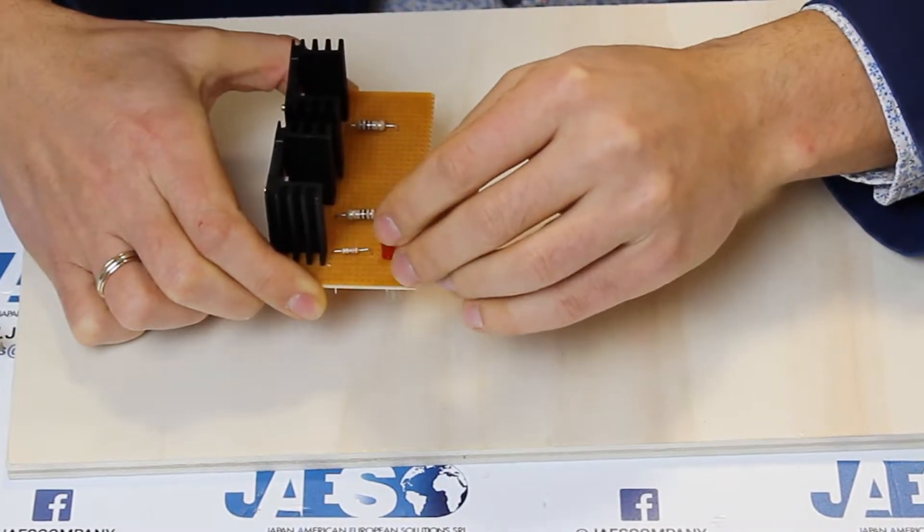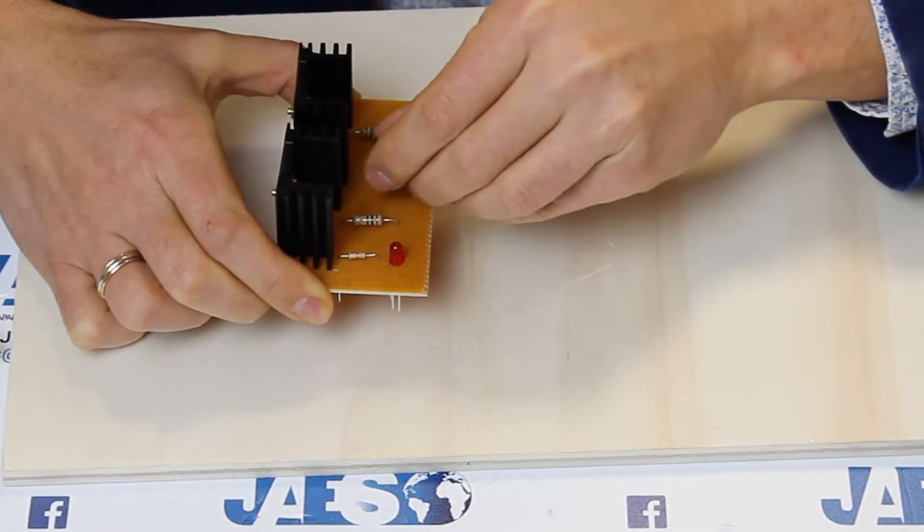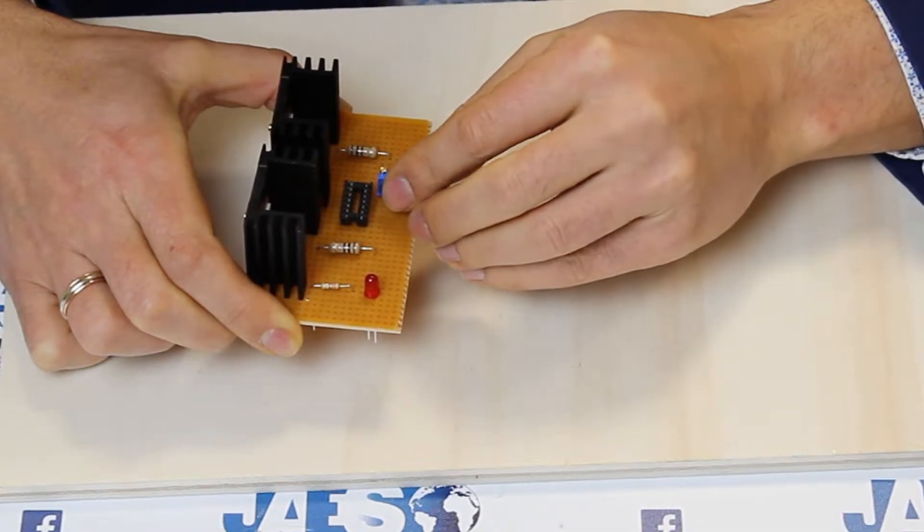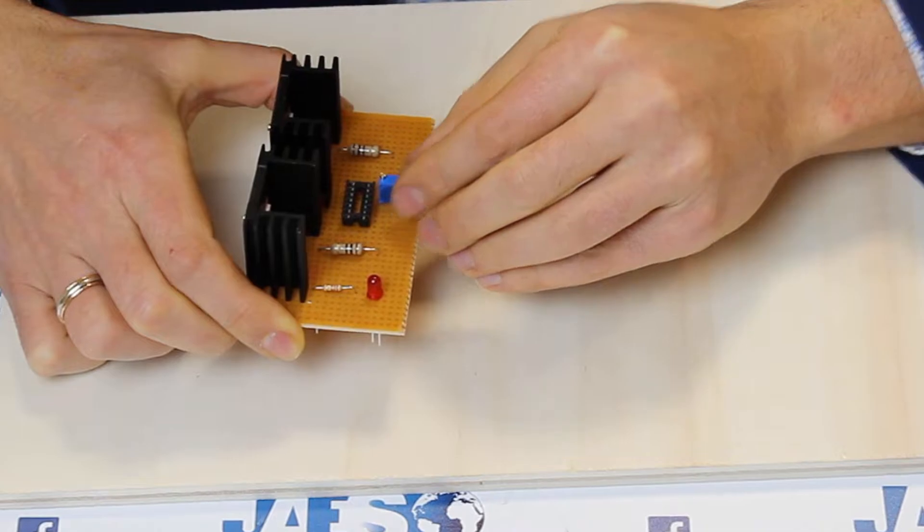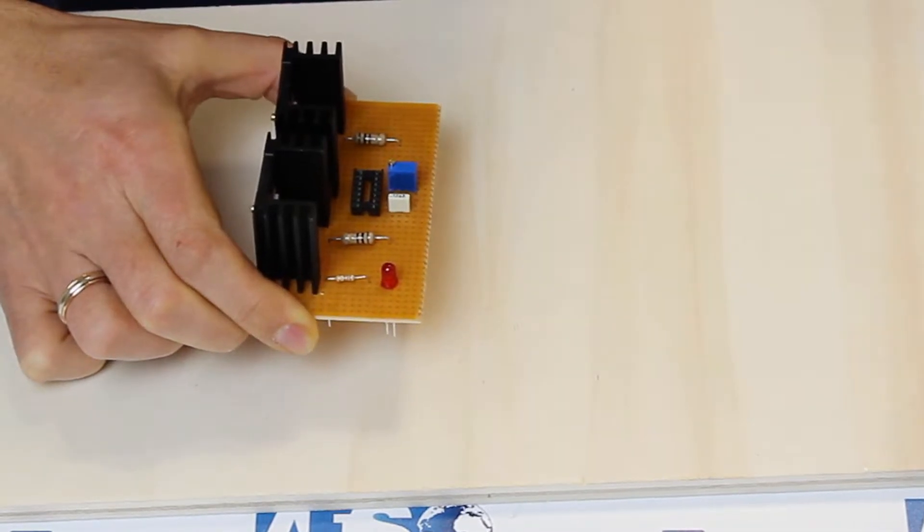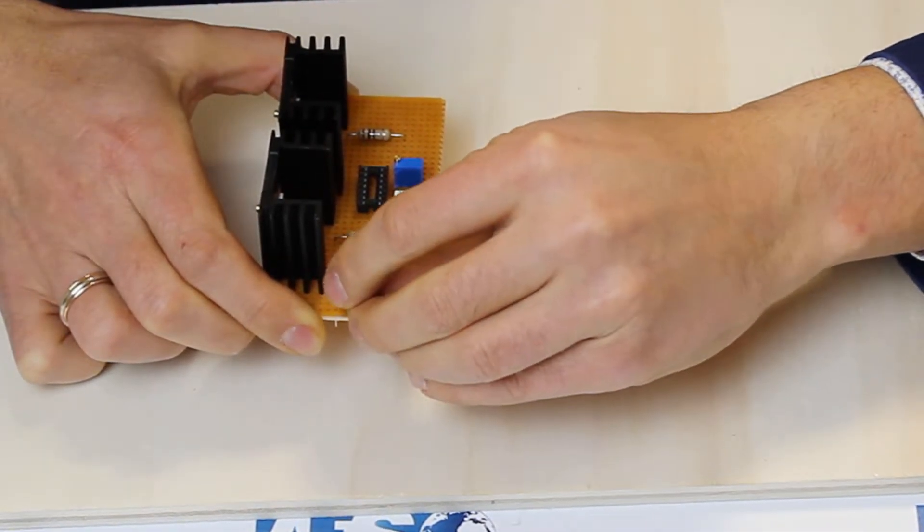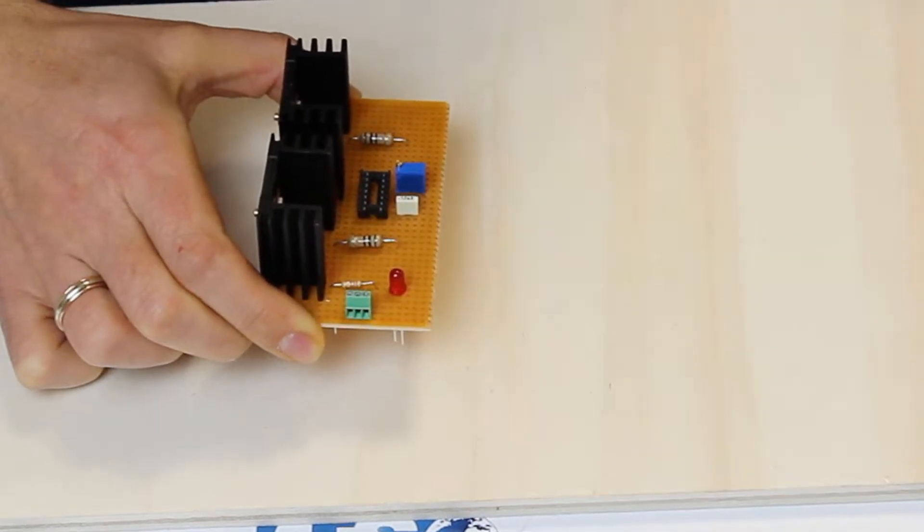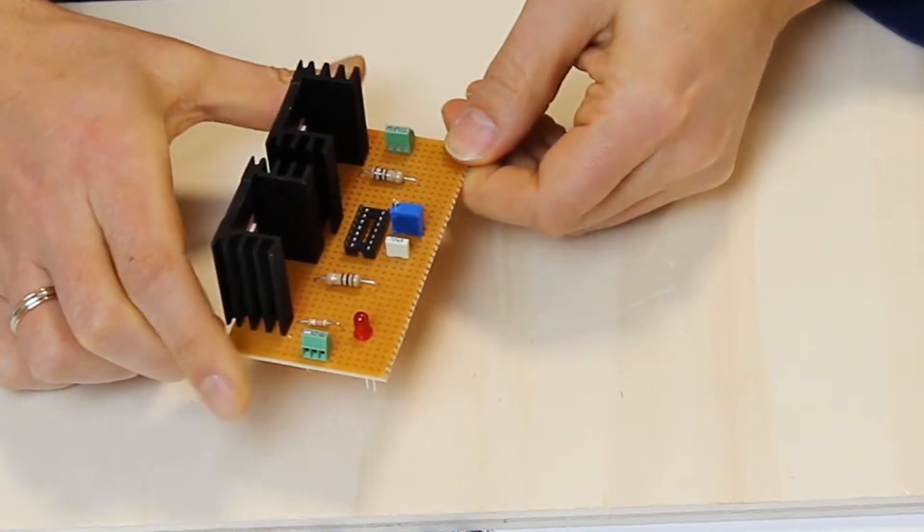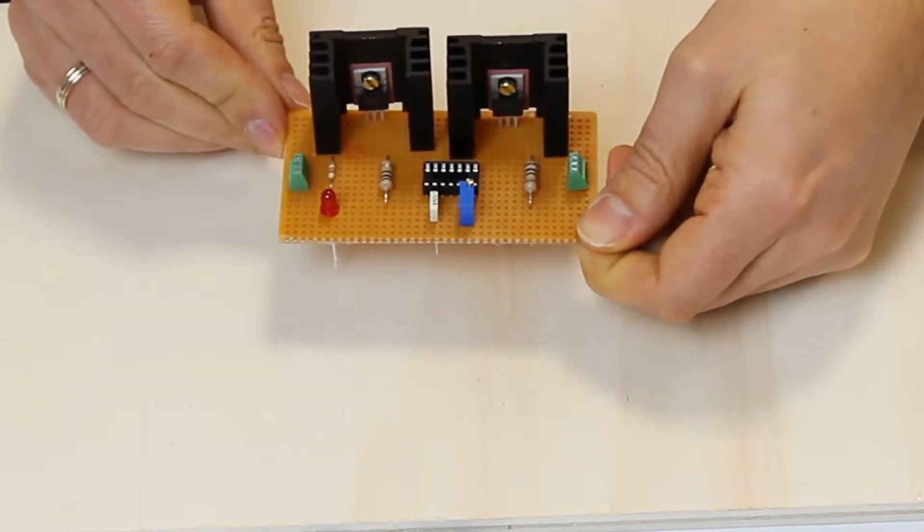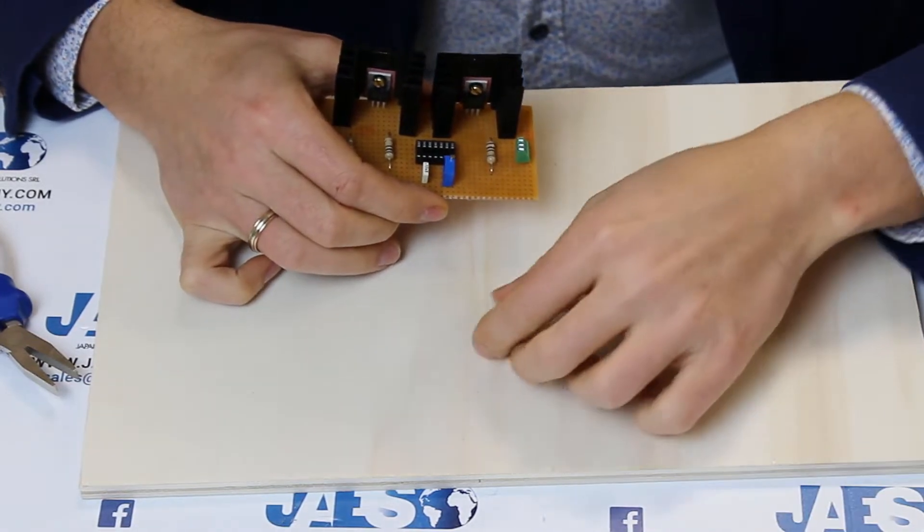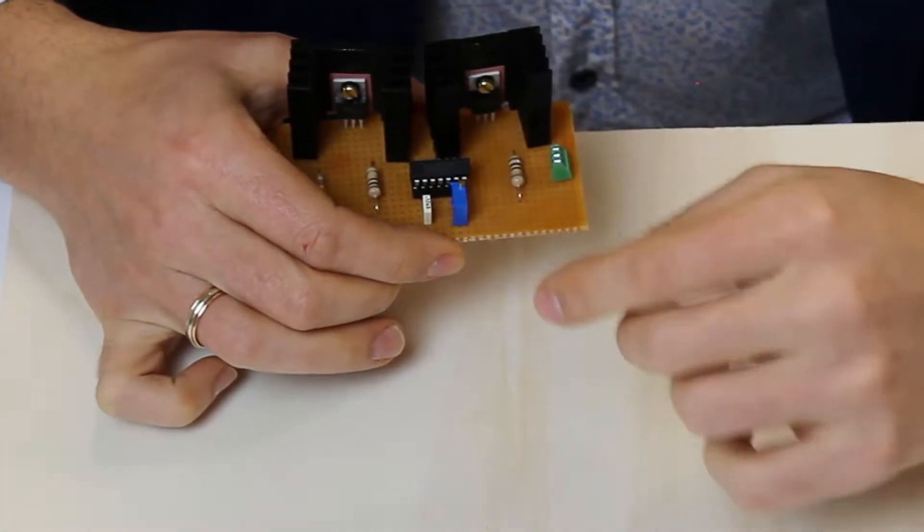Now let's proceed to insert the remaining components into the board in this way. We place the monostable multivibrator on top of the 14 pin socket.